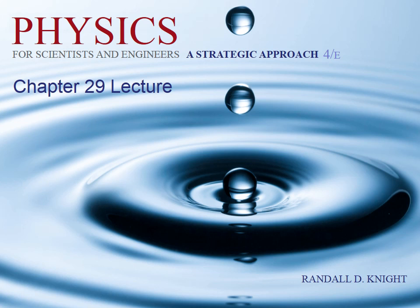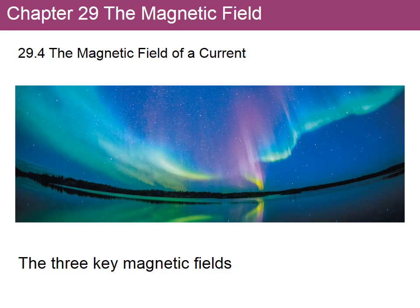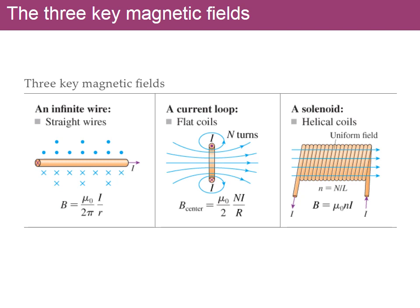In this video we're going to review section four of chapter 29 of Randy Knight's book. Section four deals with the magnetic field produced by a current, and we're going to start by summarizing the three main cases we're going to study: the field produced by a straight wire, the field produced by a loop where current goes around the loop, and the field produced by a solenoid, which is a coil with current entering one end and coming out the other.